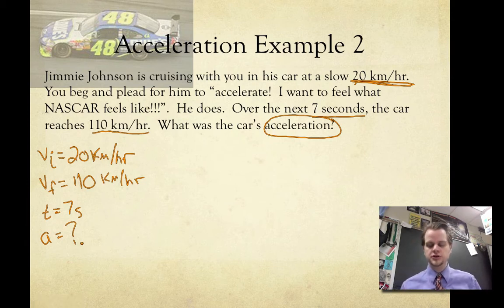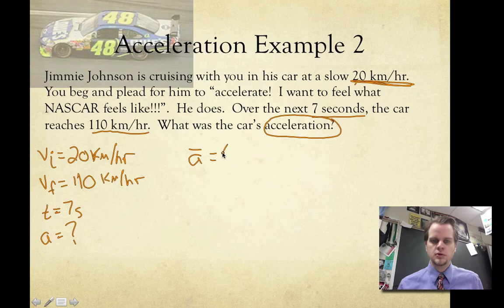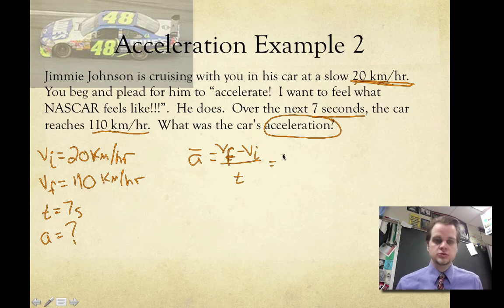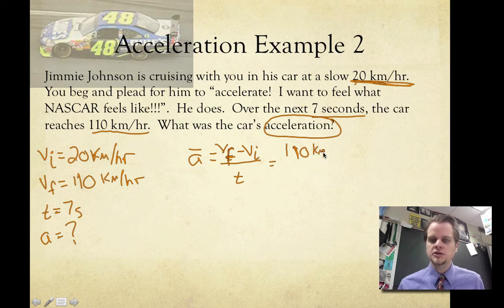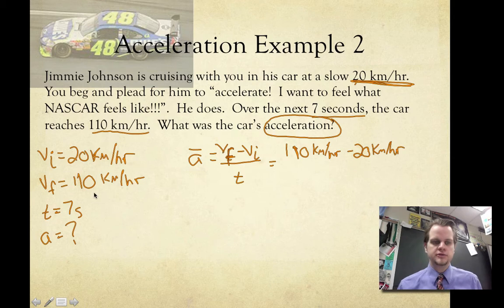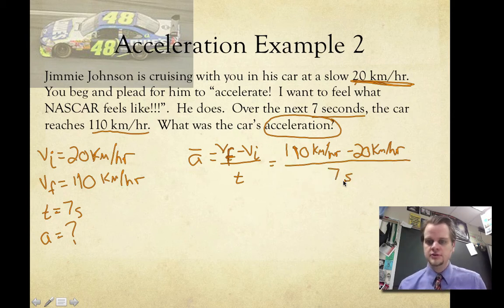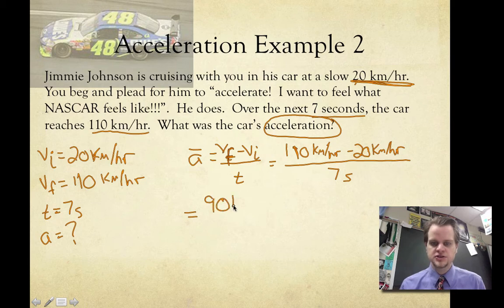You do the same thing as before — look for your equation on the central equation sheet and find A-bar equals VF minus VI over T. You always have to check, otherwise you'll mess it up. So you start doing the calculations and substitute in: 110 kilometers per hour minus 20 kilometers per hour — that's VF minus VI — divided by 7 seconds. What's 110 minus 20? That's 90. So you have 90 kilometers per hour divided by seven seconds.